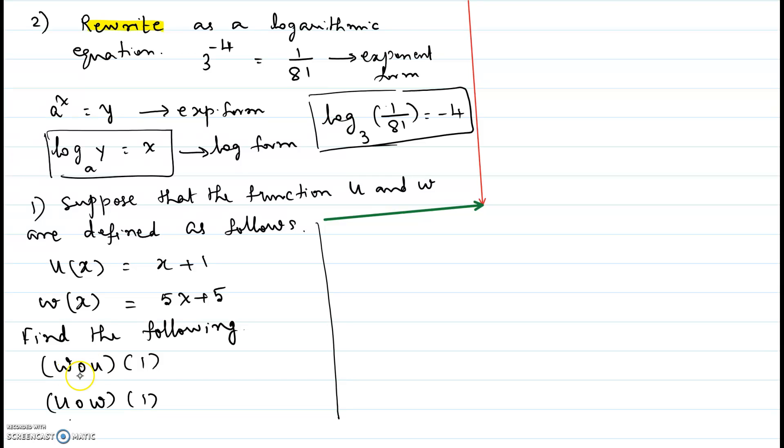Let's first try w composite u of 1. w composite u of 1 can be written as w of u at 1. So anytime you do composite of two functions, you cannot change the order. You have to write down the order in which the composite of functions is given.